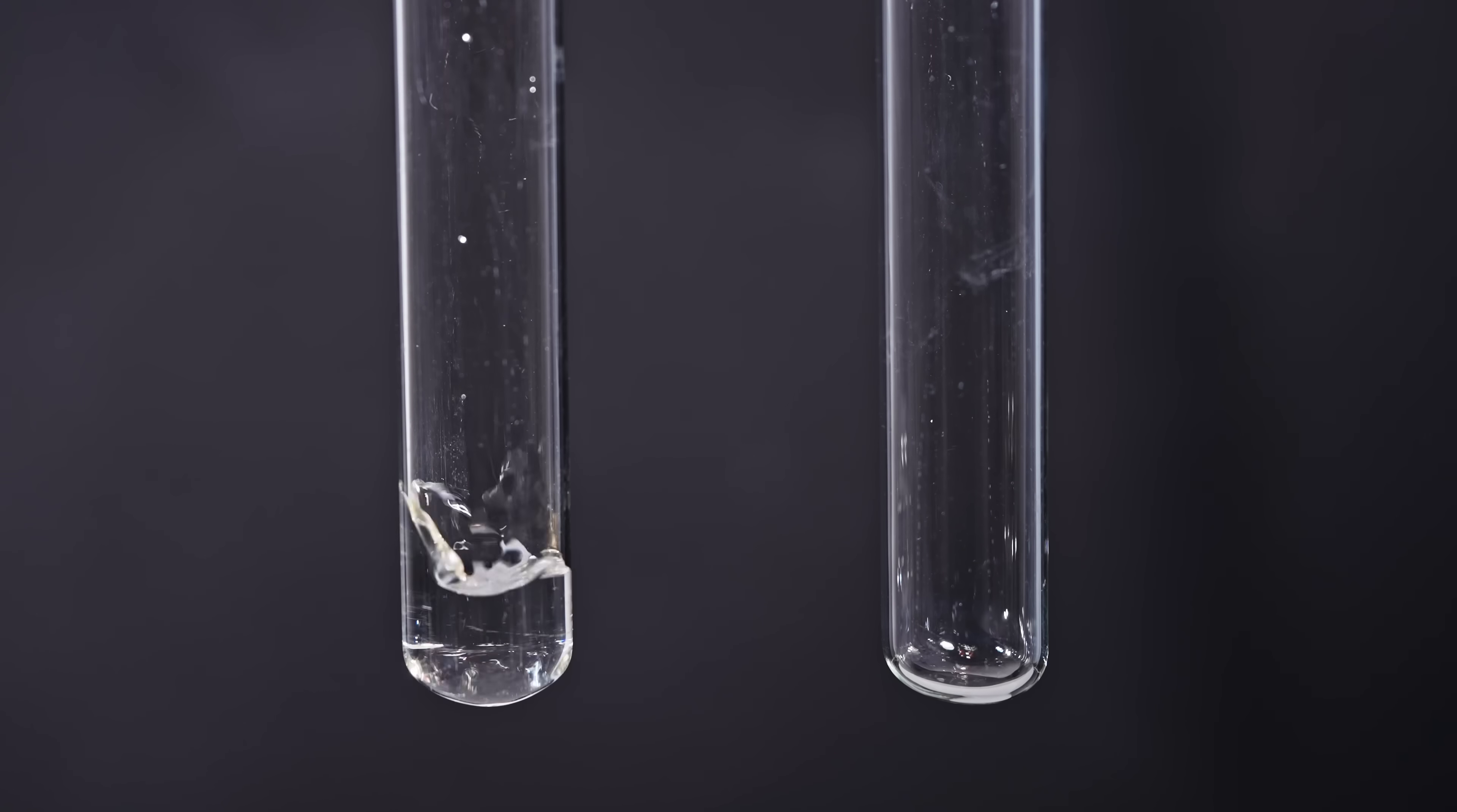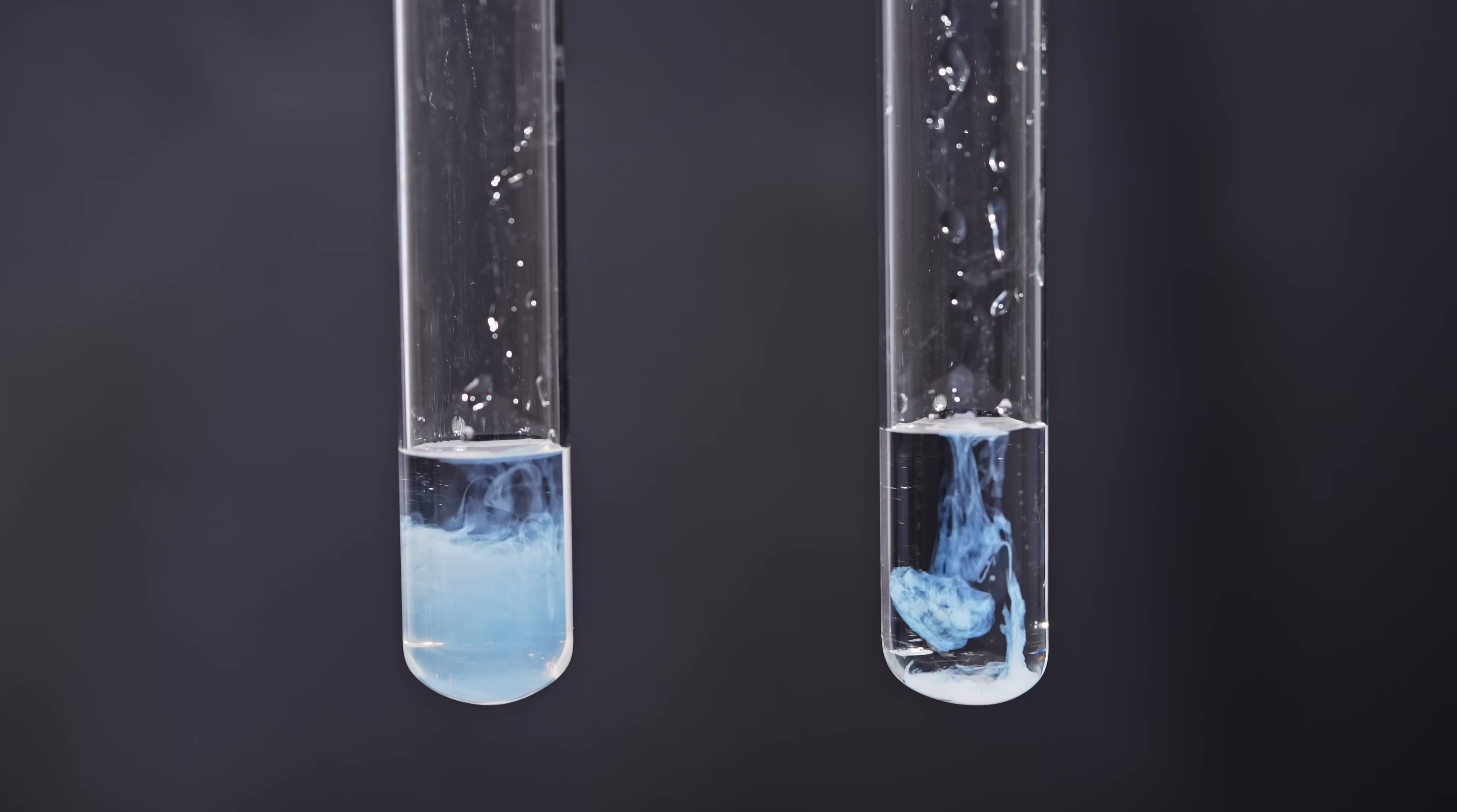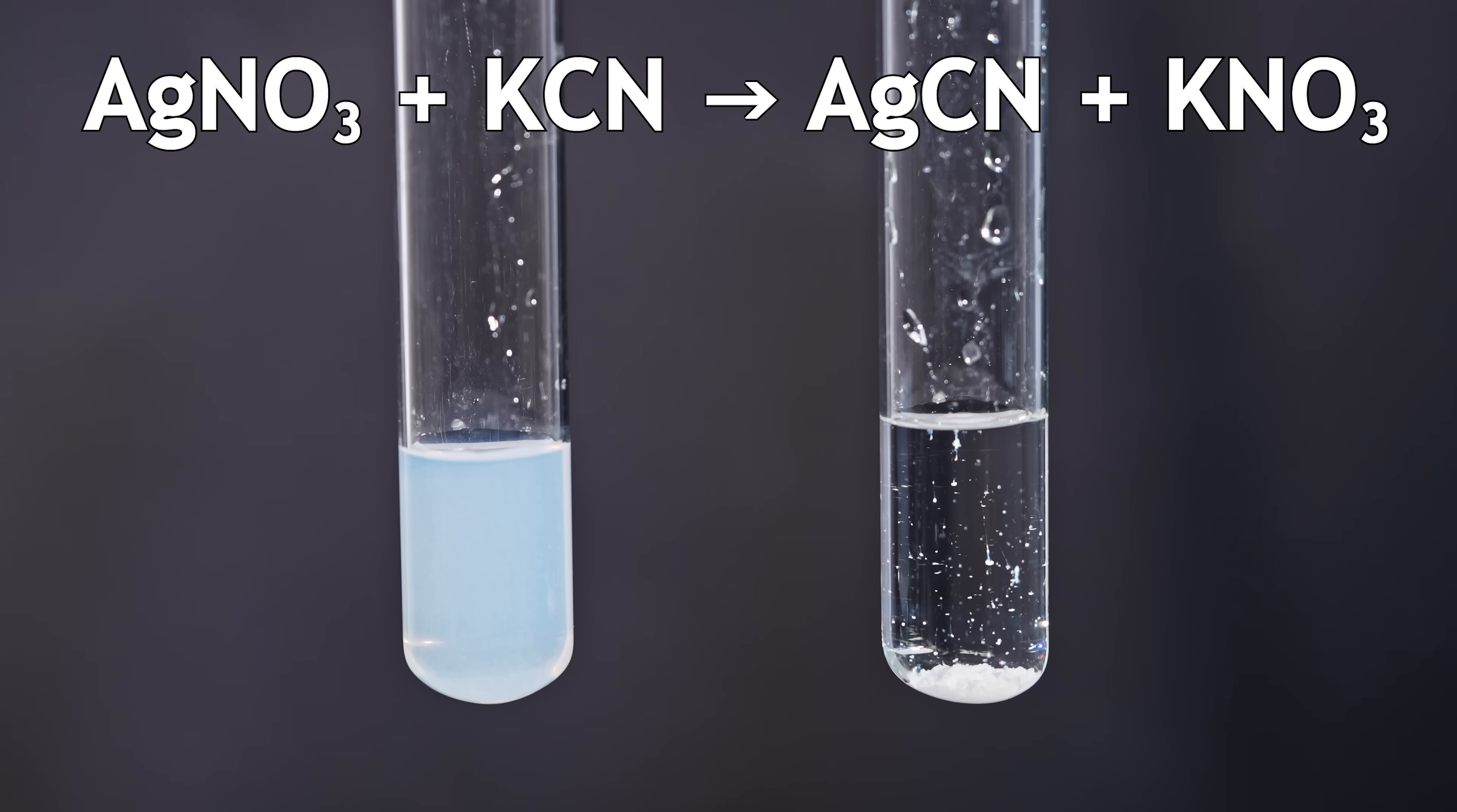Well, now let's move on to the synthesis of cyanogen. Here, I add a concentrated solution of potassium cyanide to silver nitrate. In the right test tube, the concentration of silver nitrate is 10 times higher than in the left one. This reaction produces a very interesting silver salt, silver cyanide.